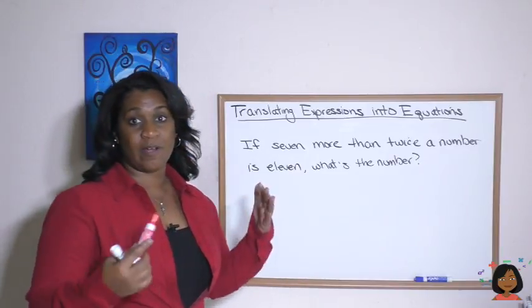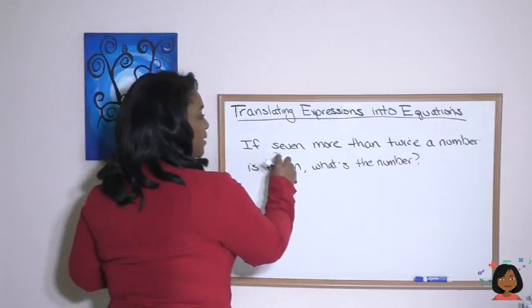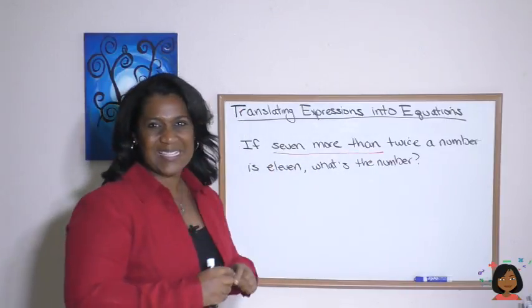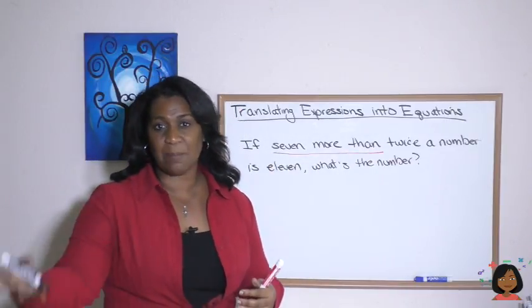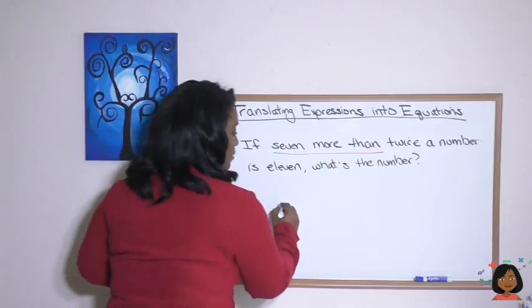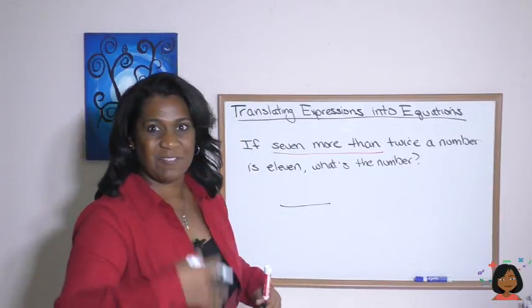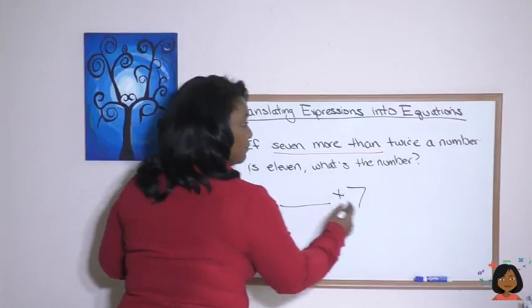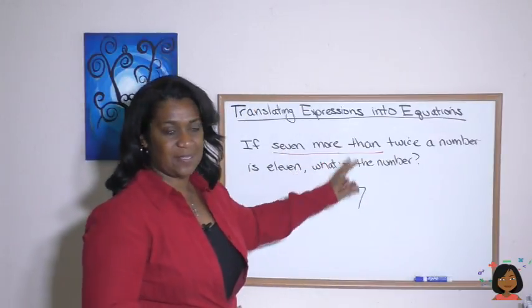So let's take a look at the different parts of this expression. If seven more than, what does that tell you? Seven more than something means you have something and then you add seven more. So we're going to add seven. So that's how we translate that piece.